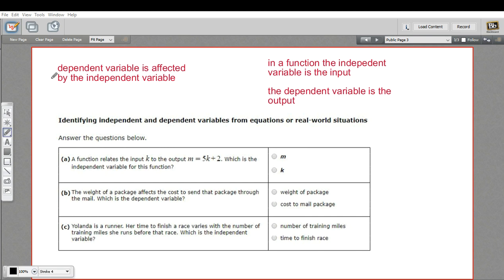The main thing to remember here is that the dependent variable is the one that's affected by the independent variable. In a function, the independent variable is what you put in, the number that changes, and the dependent variable is the output. It depends on what you put in for the independent variable.